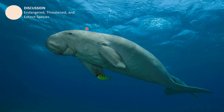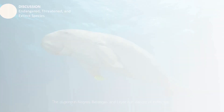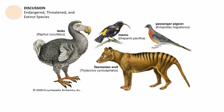The dugong, a large marine organism found in Negros and Batangas, is also in danger of extinction. Regarding extinct species, one example is the bird Drepanis pacifica. That concludes the second part of the discussion.